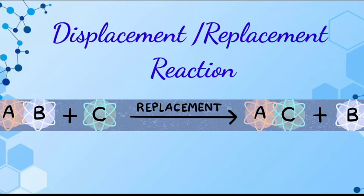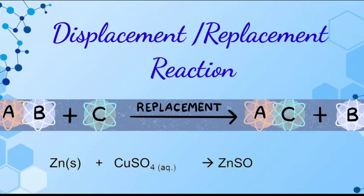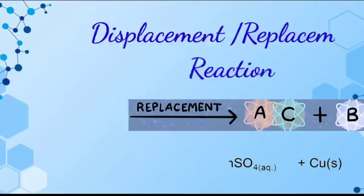For example, if we look at copper sulfate reacting with zinc, copper sulfate reacts with zinc to give zinc sulfate: Zn plus SO4.